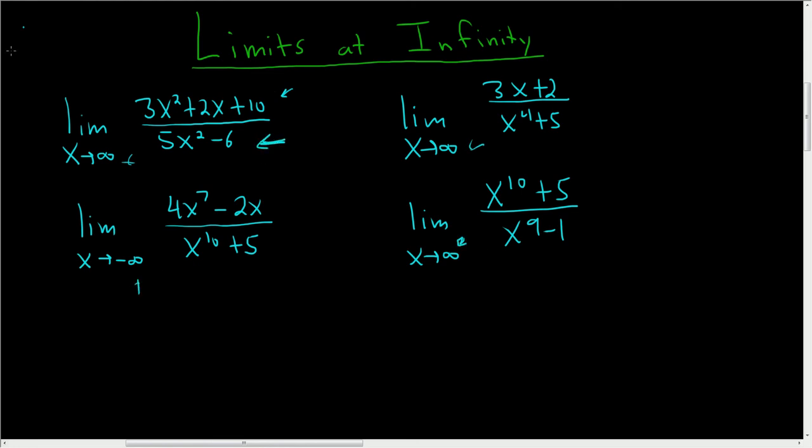The degree here in the denominator is 2. The degree in the numerator is 2, the biggest exponent. When that happens, when they're the same number, the answer is the ratio of the leading coefficient. So this is equal to 3 over 5.